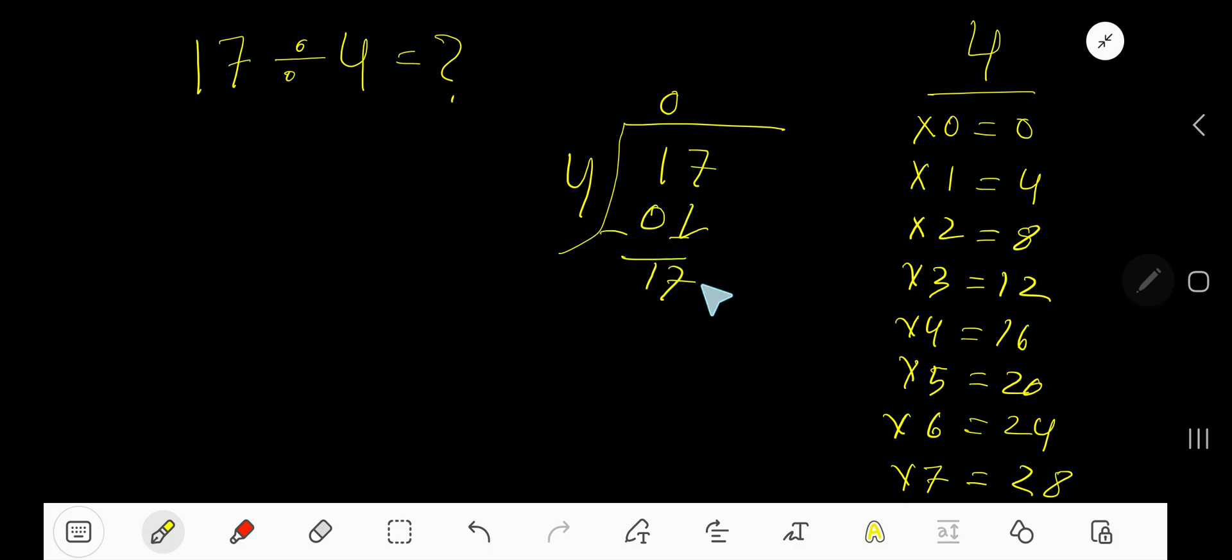4 goes into 17 how many times? 5 times is 20, 4 times 4 is 16. We need to consider 4 times 4, as 20 is greater than 17. So write 4. 4 times 4 is 16.